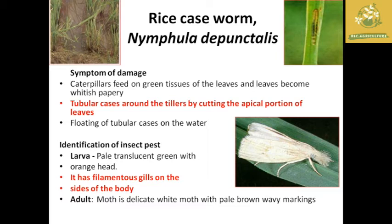The next pest is rice case worm with scientific name Nymphula depunctalis. Symptoms: larvae feed on green tissue of leaves, which becomes whitish papery structures. They form tubular cases around tillers by cutting the apical portion of leaves, which float like tubular cases on the water. For identification: larvae are pale transparent green with an orange head, filamentous gills on the sides of the body. Adults have delicate white wings with pale brown wavy markings.